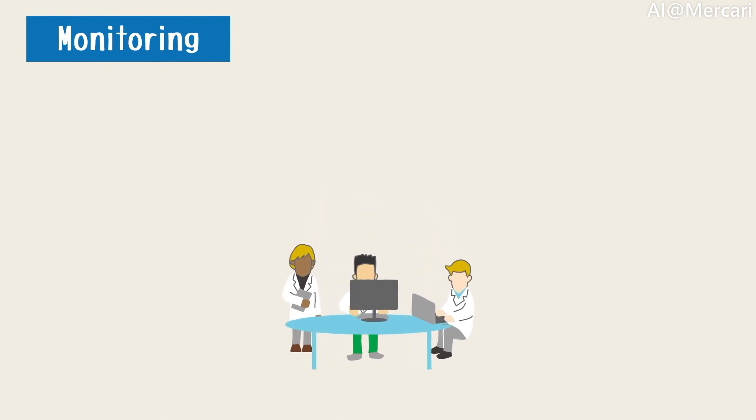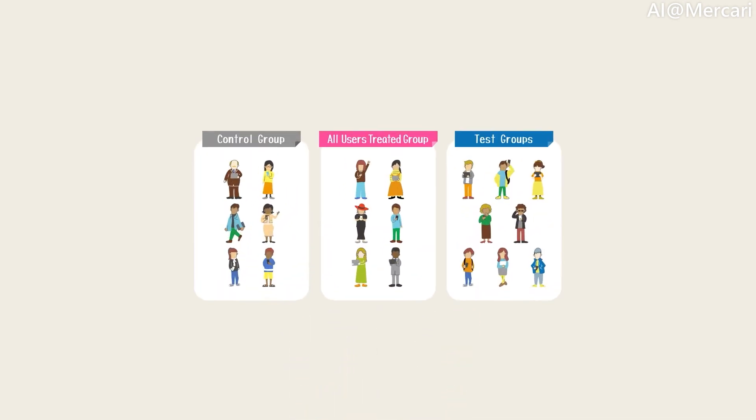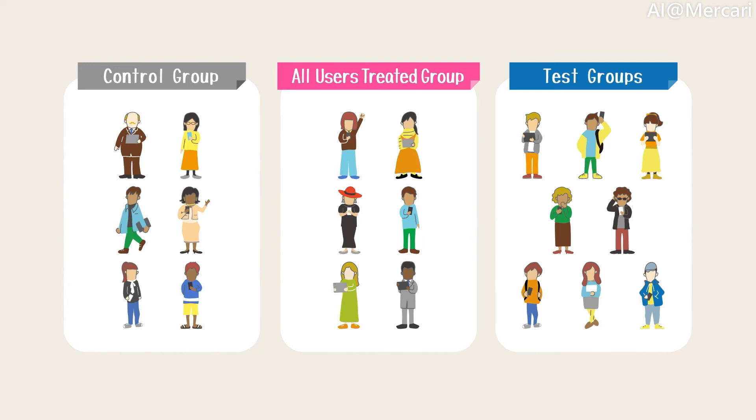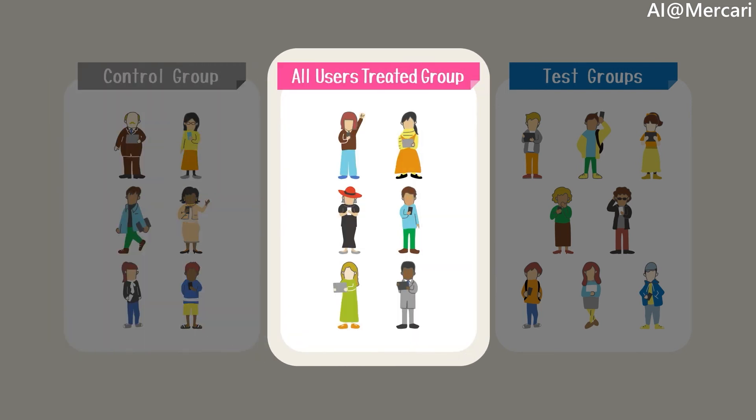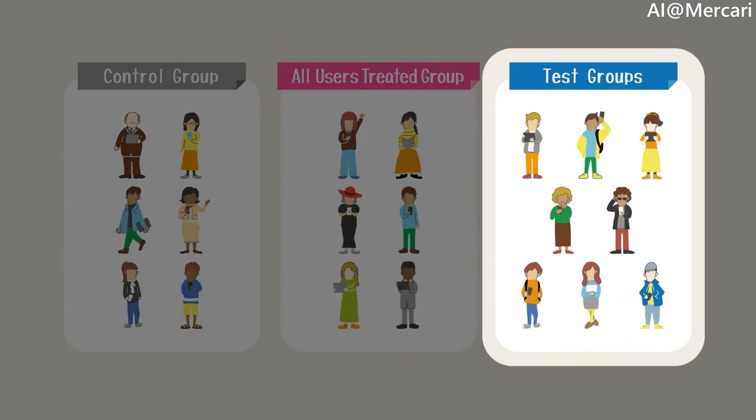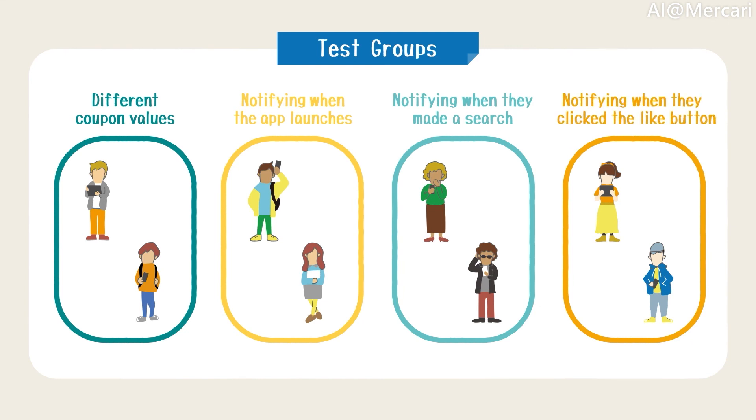We must keep monitoring the model performance to make sure they are performing as expected. To do this, we segment users into at least three groups and perform A-B testing. Control group. These users will not be sent notifications. All users treated group. All users in this group will be sent notifications. And the test groups. The test groups are further divided into subgroups, where they are treated using different settings, such as different coupon values and campaign triggers, like notifying the customer when the app launches, when they made a search for something, click the like button on an item, etc. These metrics are collected and analyzed to make sure that our models are working correctly.